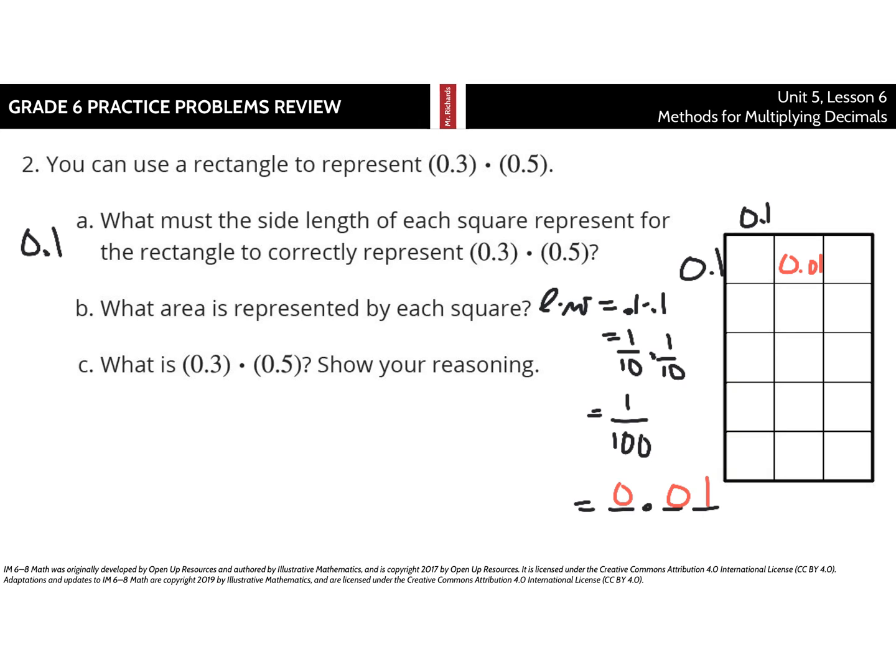To figure out what is 3 tenths times 5 tenths, using this area model, we have 1, 2, 3, 4, 5, 6, 7, 8, 9, 10, 11, 12, 13, 14, 15 squares. Each of these is an area of 1 hundredths. So, if I have 15 of these 1 hundredths, I ultimately have 15 hundredths.